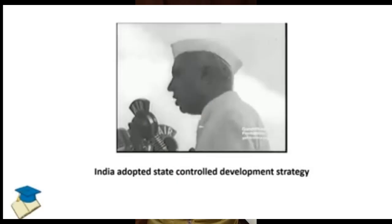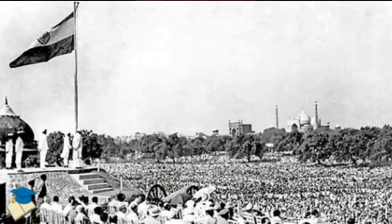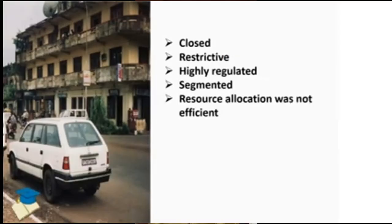So India adopted a state-controlled development strategy. After 1947 till 1990, India had adopted this state-controlled development strategy. Under this strategy, the financial system was closed, restrictive, highly regulated, segmented, and resource allocation was also not efficient.